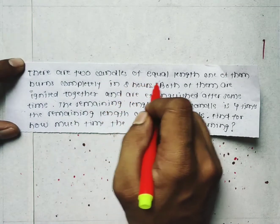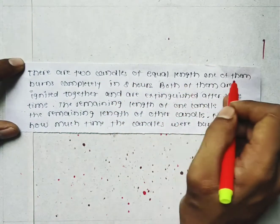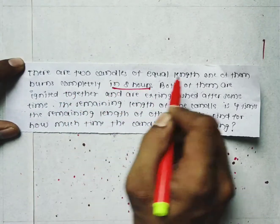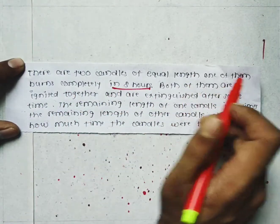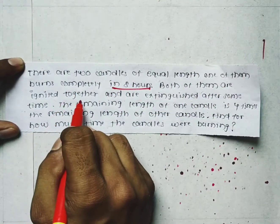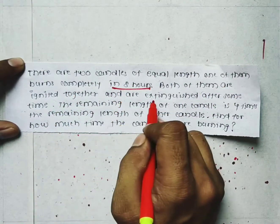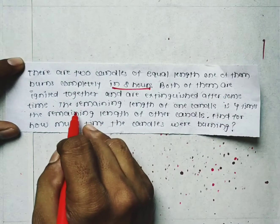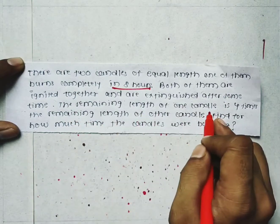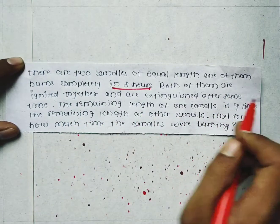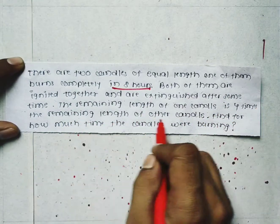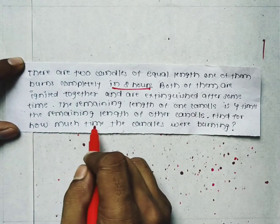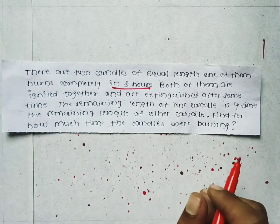There are two candles of equal length. One of them burns completely in 8 hours. Both of them are ignited together and are extinguished after some time. The remaining length of one candle is 4 times the remaining length of the other candle. For how much time were the candles burning?